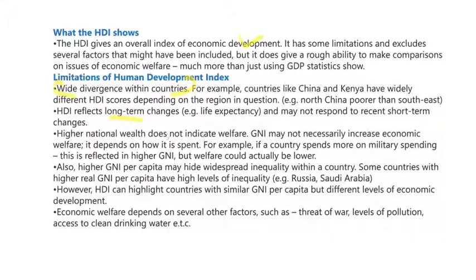Further limitations: higher national wealth does not necessarily indicate welfare — it depends on how it is spent. Higher gross national income per capita may hide widespread inequality. HDI can highlight countries with similar GNI per capita but different levels of economic development. It also depends on several factors like threat of war, levels of pollution, and access to drinking water and poverty conditions.